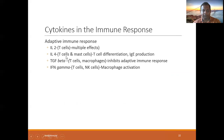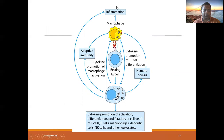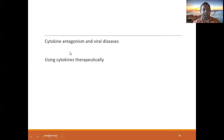In the adaptive immune response: IL-2 has multiple effects. IL-4 acts on T cells and mast cells, promoting T cell differentiation and IgE production. Macrophages are involved in inflammation and adaptive immunity. Cytokine promotion leads to TH cell differentiation, and there are multiple functions overall.